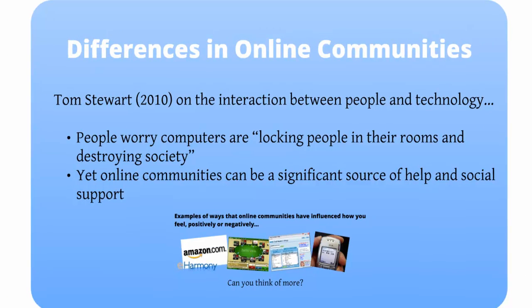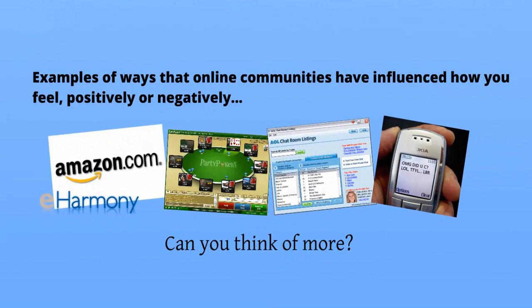What are some of the differences we see in online communities? Tom Stewart, a psychologist studying the interaction between people and technology, jokes that sometimes we worry that computers are locking people in their rooms and destroying society, or that the isolation we feel as humans is the fault of technocrats. And yet, online communities seem to contradict this simplistic analysis. Online communities can be a significant source of help and social support. Whether we like it or not, our emotion plays an important part in how we let technology control us. Think to yourself: what are some examples of ways that online communities have influenced how you feel, either positively or negatively?